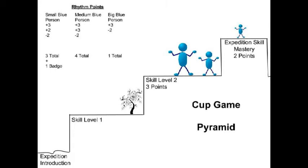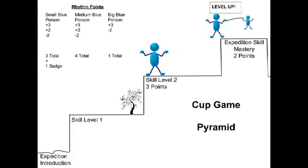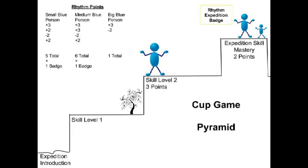Big blue is busy with something else, so little blue helps medium blue, only this time they practice and finally decide they are ready. They make several videos before they decide it is perfect and then they submit their final one to the rhythm experts and all their efforts pay off. They both level up, both earn two points, and medium blue gets the cup game badge.